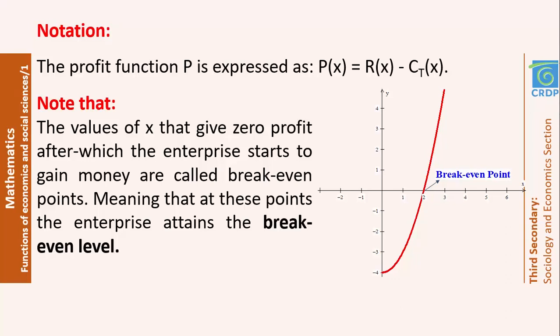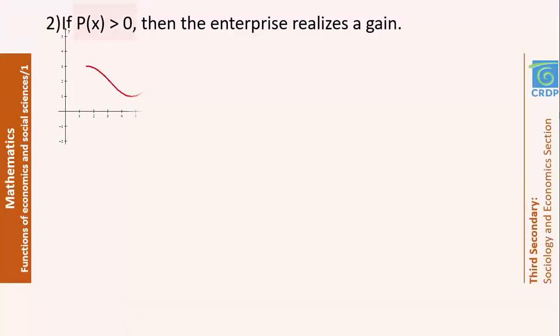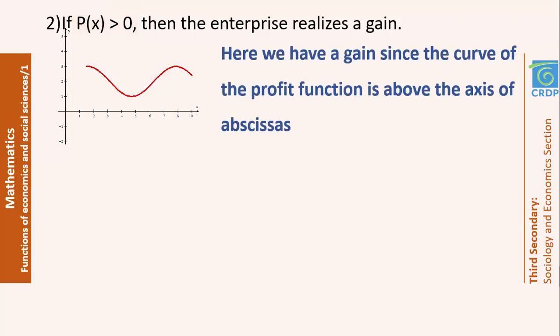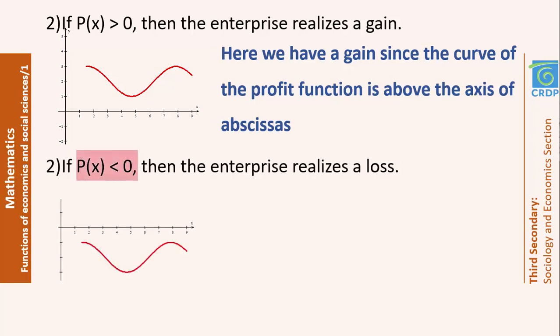If the profit is positive, the enterprise is realizing a gain — the profit curve is above the x-axis for all values of x. On the other hand, if P(x) is negative, meaning the curve is below the x-axis, the enterprise is realizing a loss. In other words, the revenue achieved is less than what was paid for production — less than the total cost.